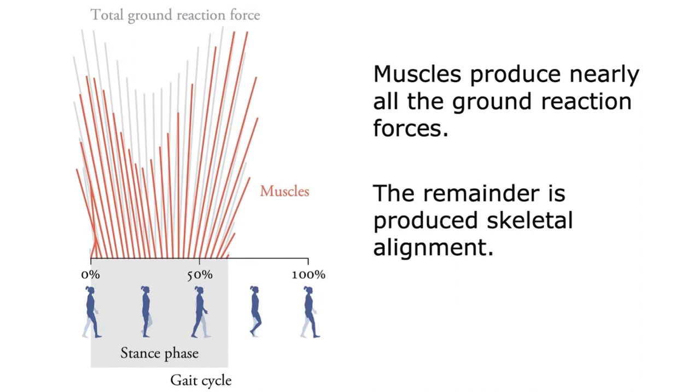We also want to look, that's the vertical component of the ground reaction force. We also want to look at the fore-aft component. Forward ground reaction forces propel you forward. Backward ground reaction forces slow you down. They produce a deceleration of the mass center.